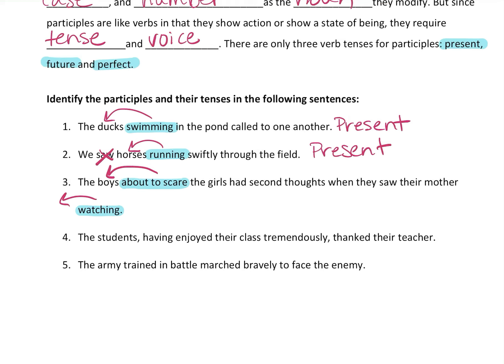'The boys about to scare the girls' — because a participle comes from a verb, it can have an accusative, since a verb can have a direct object. In this case the direct object is 'the girls' — the girls answers the question 'who is about to be scared.' So participles sometimes act like adjectives, sometimes like verbs, and sometimes like both together. 'About to scare' — what tense is that? That is actually future tense. And 'their mother watching' — the mother is doing it right then and there, so it's present tense.